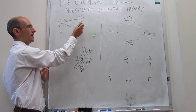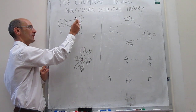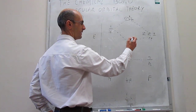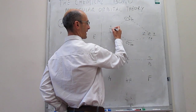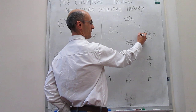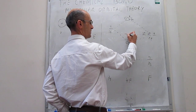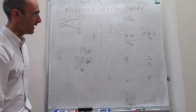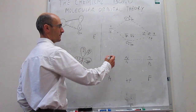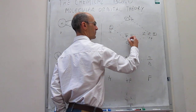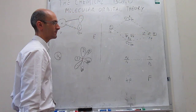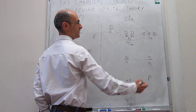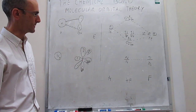Because the 2px and 2py cannot spatially interact with the 1s orbital, they go to the molecular orbital diagram unchanged. Those will be the 2px and 2py non-bonding orbitals. So now we can finish the molecular orbital diagram: the one electron from hydrogen and one from fluorine's 2pz populate the bonding sigma(1s, 2pz), while the 2px and 2py remain unchanged as non-bonding orbitals.